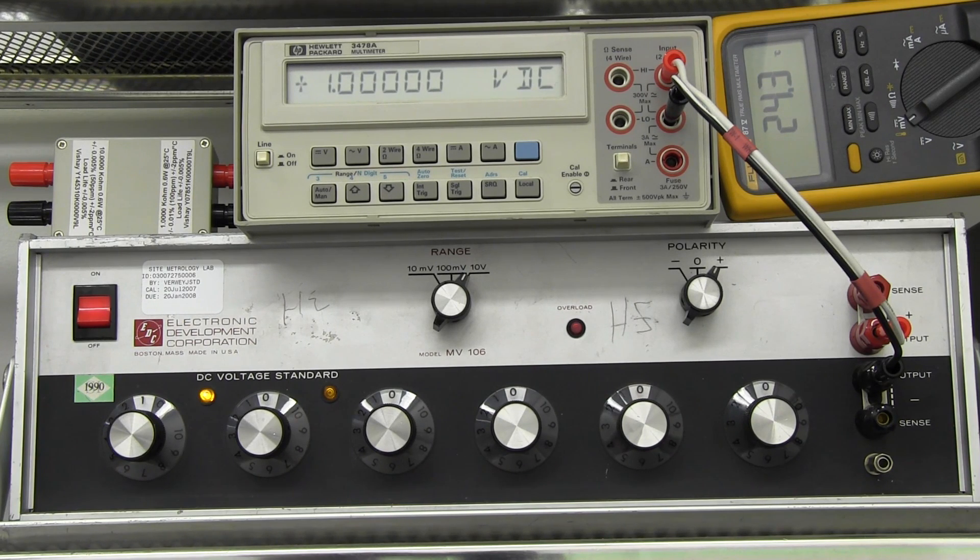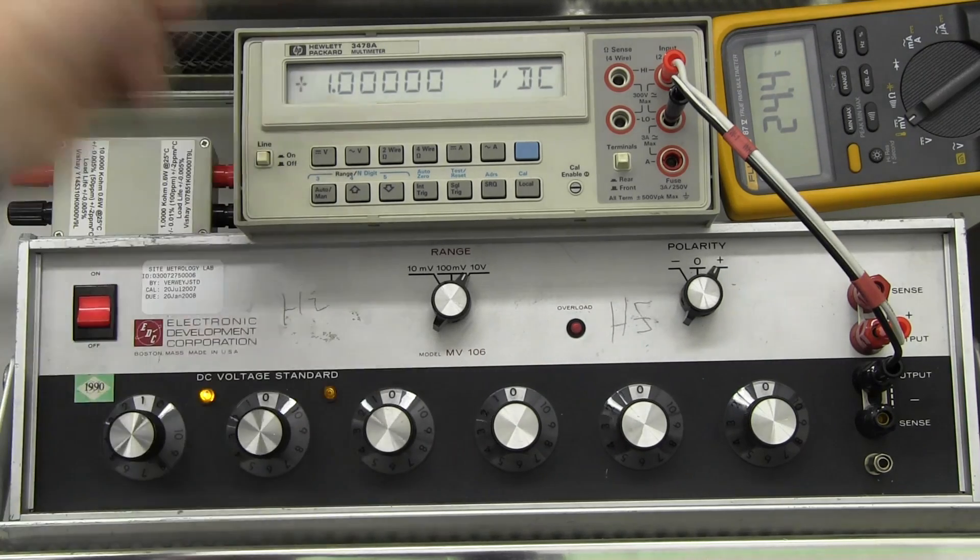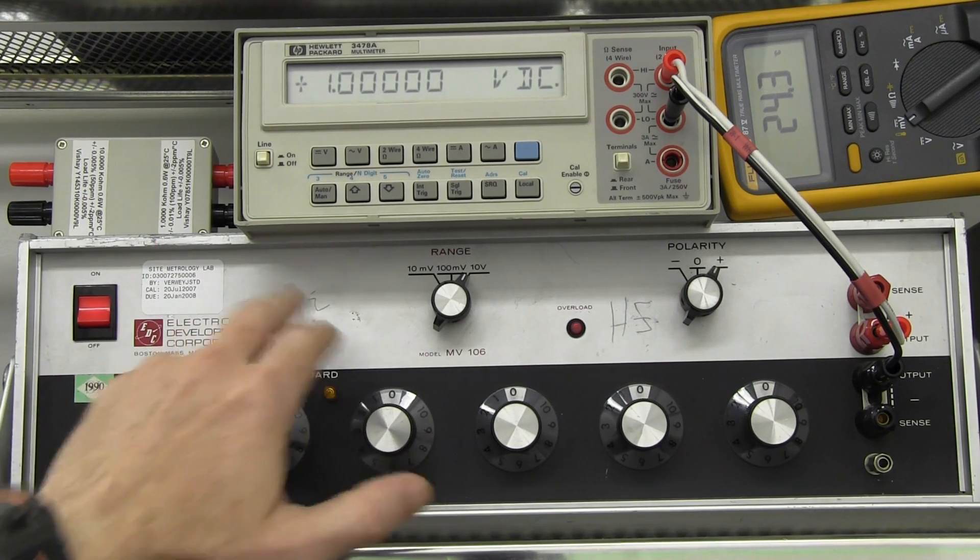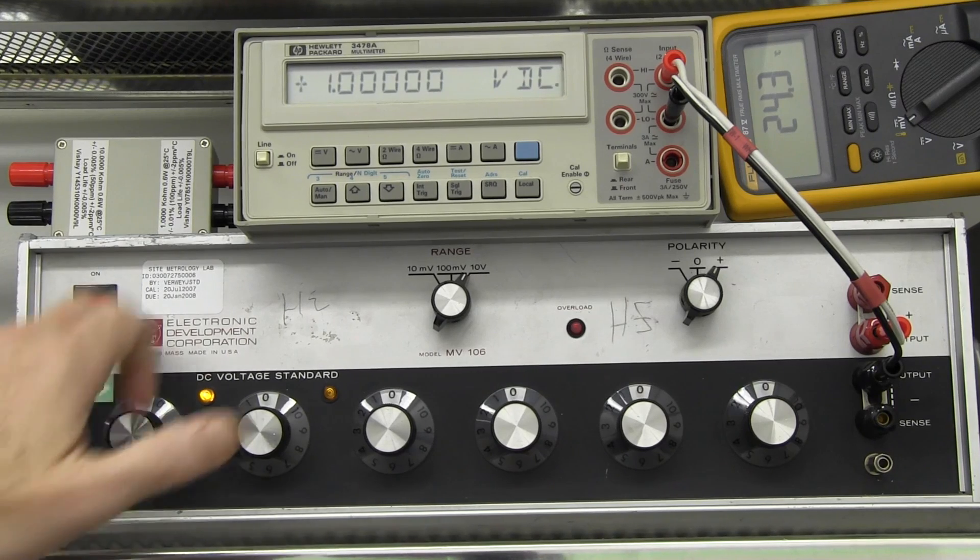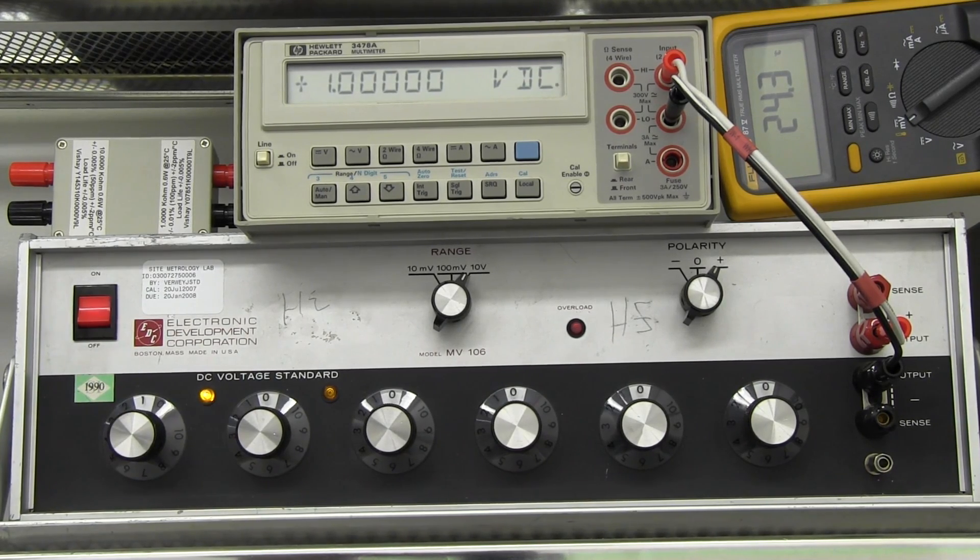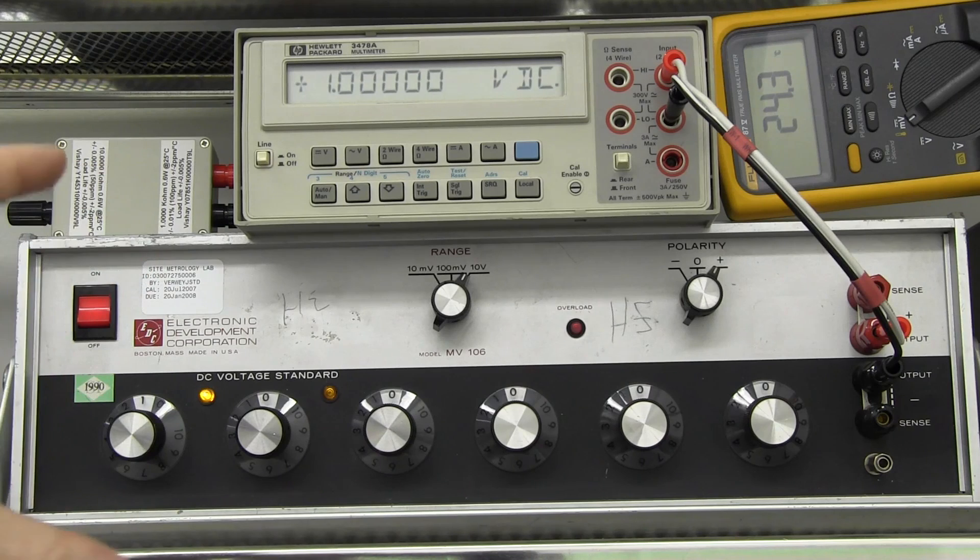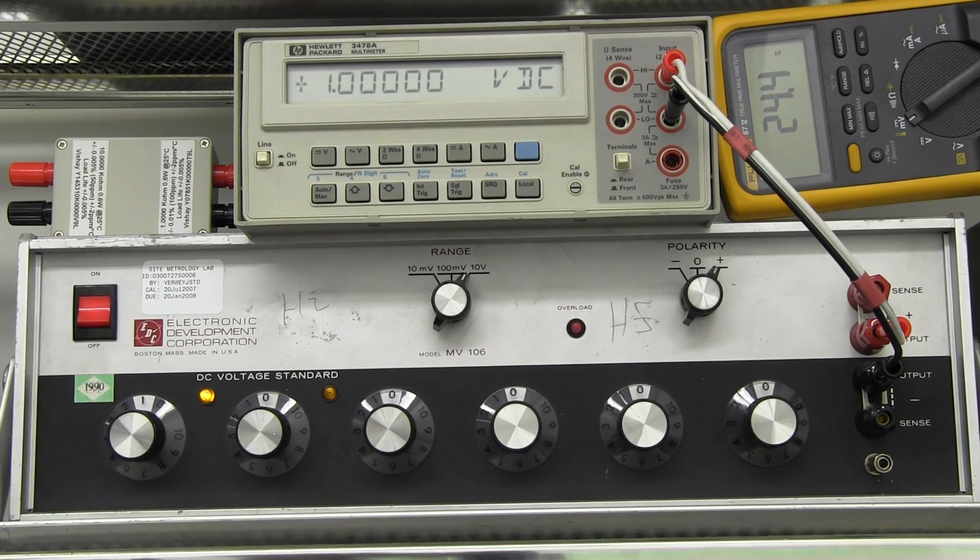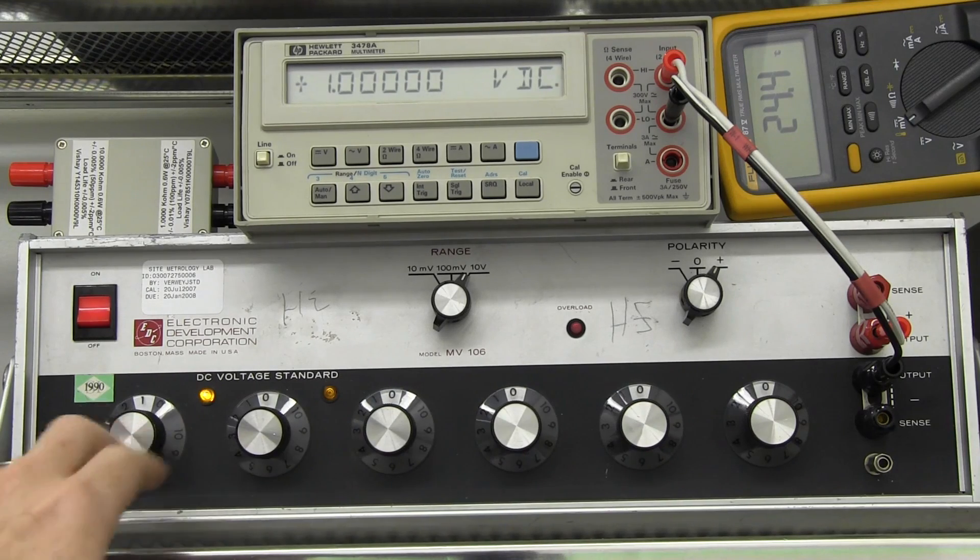This might be an in-depth tutorial as well. I just wanted to show off my little transfer standard here, my HP 3478A. I'll link in the video to this EDC Electronic Development Corporation MV106 DC voltage standard that I've got. I bought this for like 20 bucks on eBay. It was an absolute bargain. And I took it to the local calibration laboratory Trio Smart Cal. They're just down the road here. And I'll link in the video to that and you'll see that this was actually absolutely spot on. It didn't need any adjustment whatsoever. And it's a six decade device so I can adjust it.